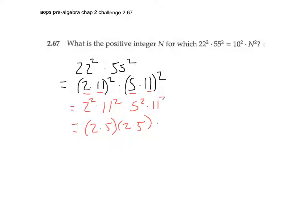times 11 squared, 11 to the fourth. Okay, now so then we're trying to get it into the form 10 squared times n squared, and what do we have right now? We have 10 squared times 11